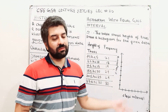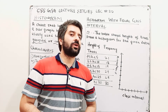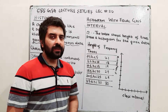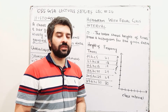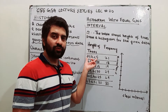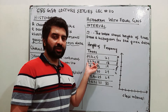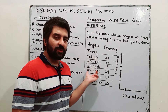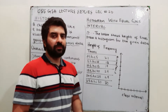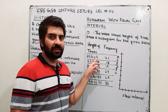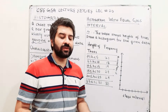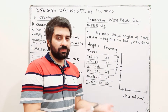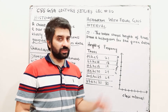This question is for equal class interval histogram. These classes have equal intervals of 5: 0 to 5, 5 to 10, 10 to 15, 15 to 20 — the difference between upper class limit and lower class limit is the same, which is 5. This is what you call equal class interval, and this may be one of the types of questions they ask about histograms.